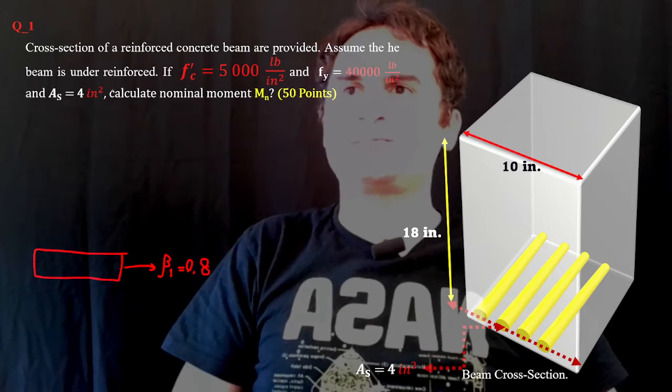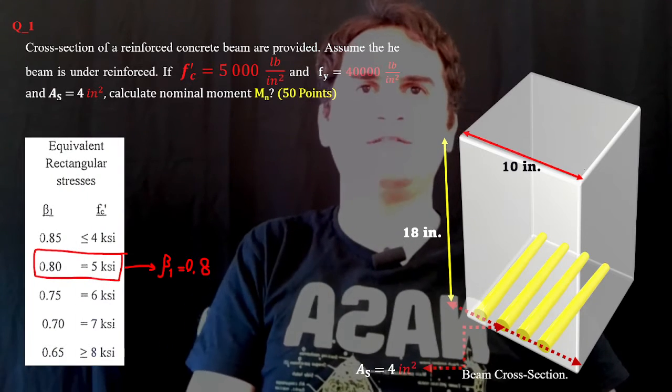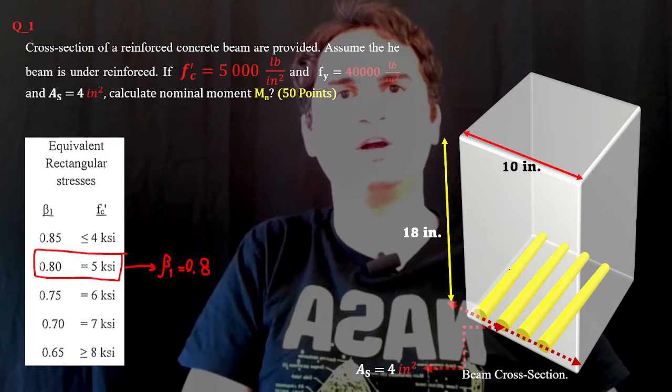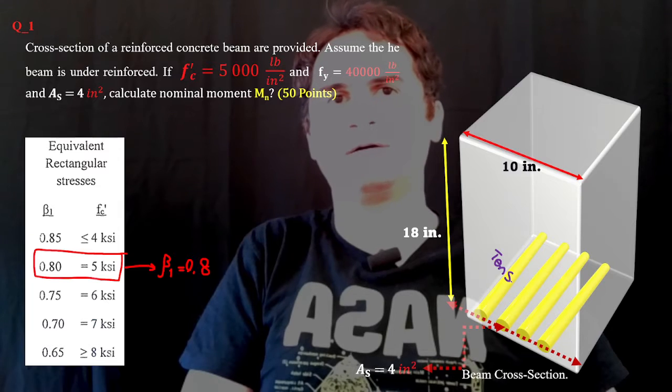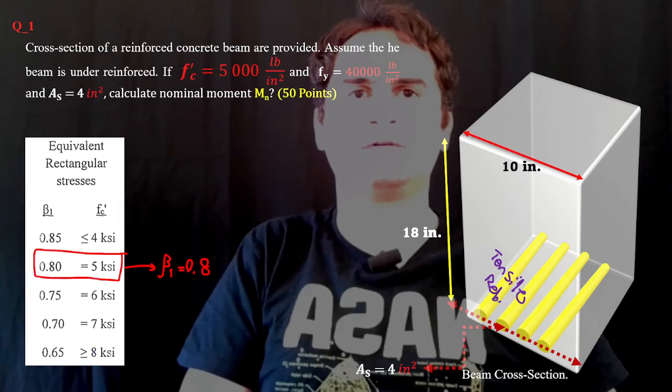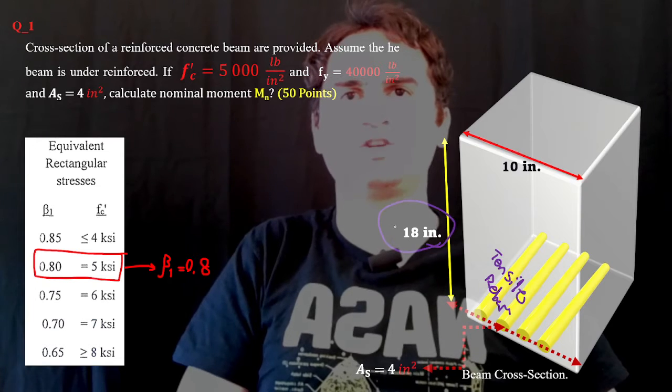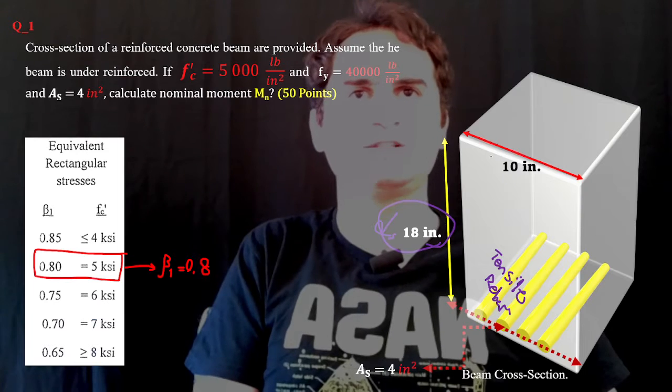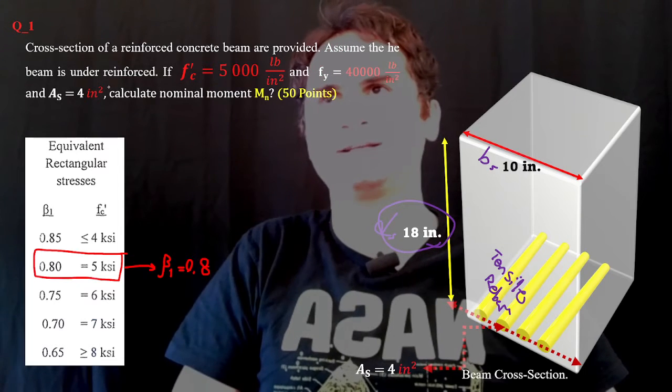In this problem we have a rectangular solid cross section with tensile rebar in the bottom of the section. The effective depth d is 18 inches and width of section b is 10 inches.